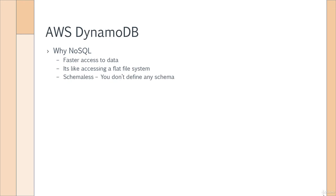Next, this is schema-less in design. What I mean by schema-less is that you don't need to define the schema beforehand. Let's say you had an Oracle database or a SQL database — you would first have to define the table and what would be the columns. But in a NoSQL database, you don't have to define the columns of the table beforehand. Each row in the table can conform to a different schema altogether.